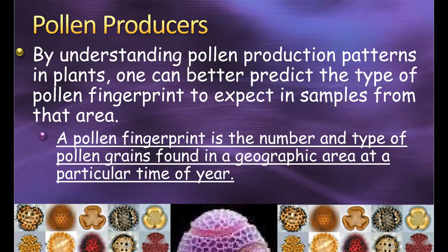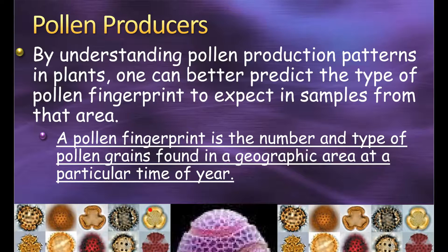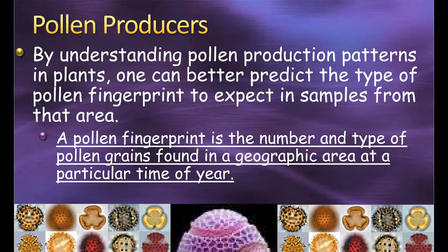We can use that pollen fingerprint to help us map out or pinpoint the location of a crime scene or where a body has been or was moved to. The definition of a pollen fingerprint is the number and type of pollen grains found in a geographic area at a particular time of year. You take a sample of all available pollen, separate them by type based on shape and appearance, and count how many of each kind you find.